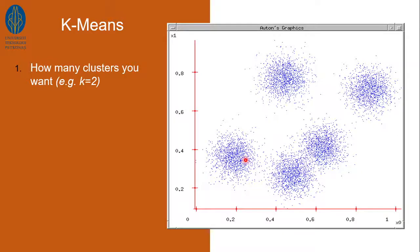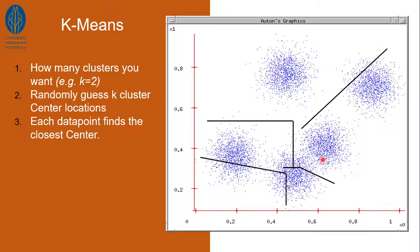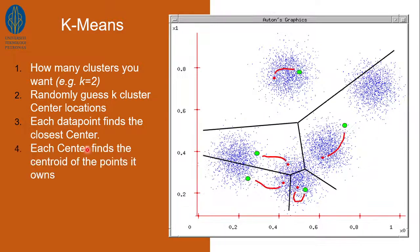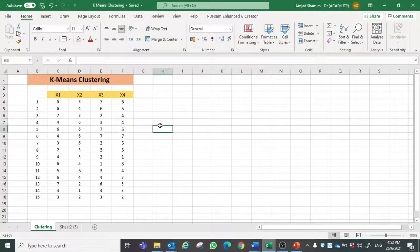Here is our data plotted on a graph. Step 1: decide how many clusters you want — for example, we want two clusters, so k equals 2. Step 2: randomly choose the cluster center locations. Step 3: each data point finds the closest center. Step 4: each center finds the centroid of the points it owns. Step 5: jump there and repeat until terminated.